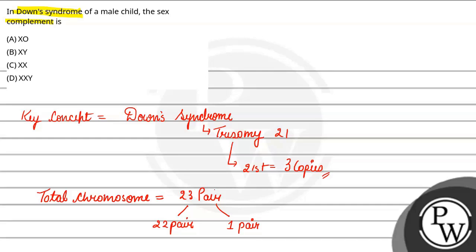Now, you can see that this is the 21st pair. The 21st pair, which we get to see 3 copies of. It came into the autosomes. If we say that we get to see on the 23rd pair, then it comes to sex chromosomes.